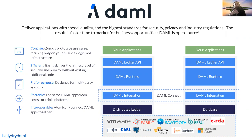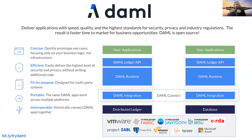DAML is very secure by default. We have these concepts called signatories, observers, and choices, which basically correspond to read, write, and execute permissions in a Unix system. When you're writing DAML code, in every single template you write you are very explicit about which parties can create a template - being a signatory - which parties can read a template - being an observer - and which parties can execute what on a template through different choices on that contract.